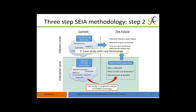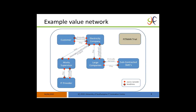The second step of the methodology is to look at case studies — for us, those were the ten FITMAN trials. We look at changes without and with FITMAN technology, starting from the status quo, and then perform a cost-benefit analysis to determine who is affected by the technologies and changes in business processes, what the costs and benefits are, and try to estimate them. Part of this is creating a value network that identifies various stakeholders as part of the business scenario.